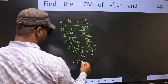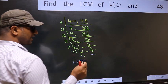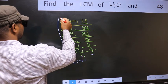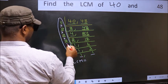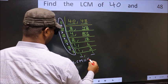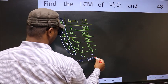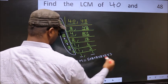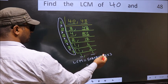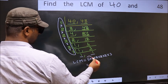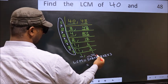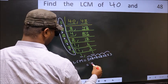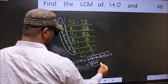So our LCM is the product of these numbers: 5 times 2 times 2 times 2 times 2 times 2 times 2 times 3. Let us multiply these numbers — 3 times 4 is 12, and the final result is our LCM.